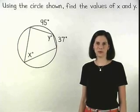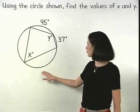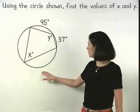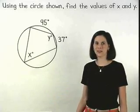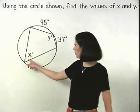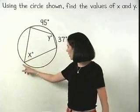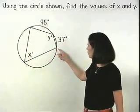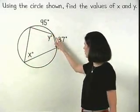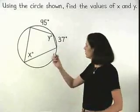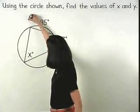In this example, we're asked to use the circle shown to find the values of x and y. Notice that x represents the measure of an inscribed angle, so we know that it equals half the measure of the intercepted arc, which is the arc shown here.